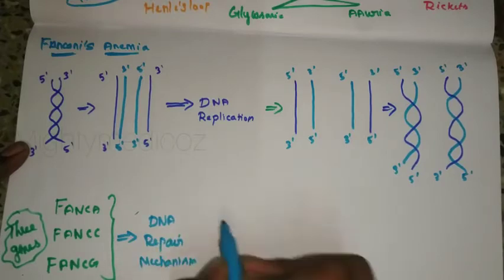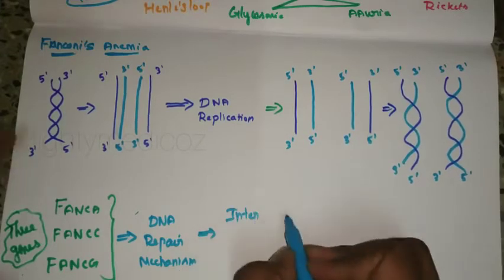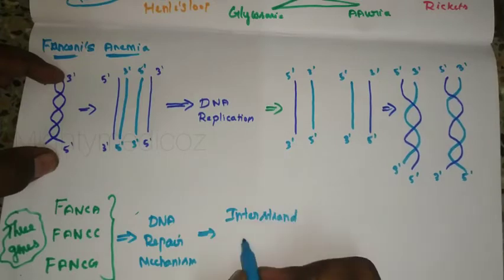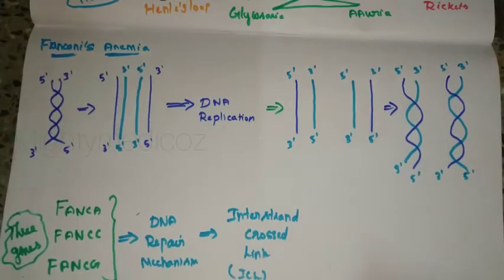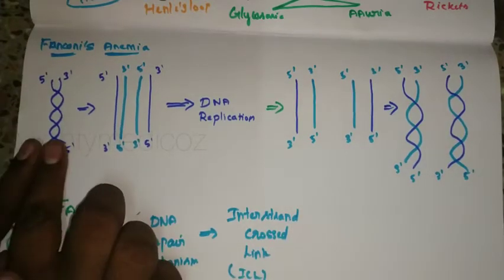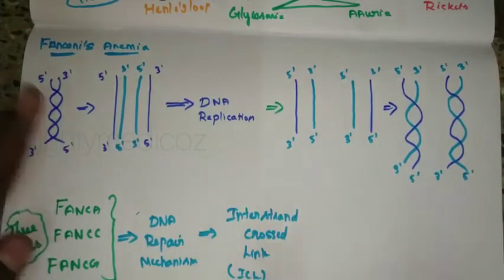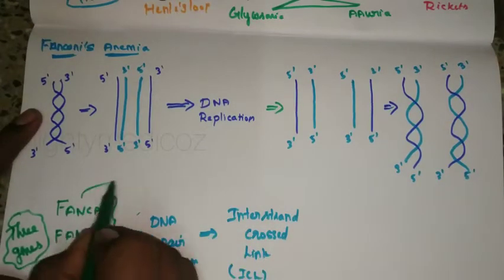Specifically, these Fanconi genes are involved in repairing interstrand cross-links — abbreviated ICL — which are abnormal bonds between the two strands of DNA. When ICL occurs during replication, it is the job of these Fanconi genes to repair it.